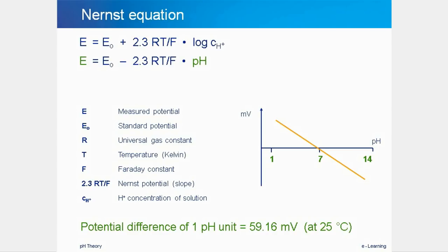The Nernst equation consists of several physical constants and the temperature of sample and electrode. If all physical constants and a standard temperature of 25 degrees Celsius are input into the equation, the relationship between potential and pH is a potential change of minus 59.16 millivolts per pH unit. So if the pH value increases from 7 to 8, the potential decreases from 0 millivolts to minus 59.16 millivolts. This well-defined relationship between potential and pH enables us to measure the pH value and calculate the concentration of acid or base present in the sample.